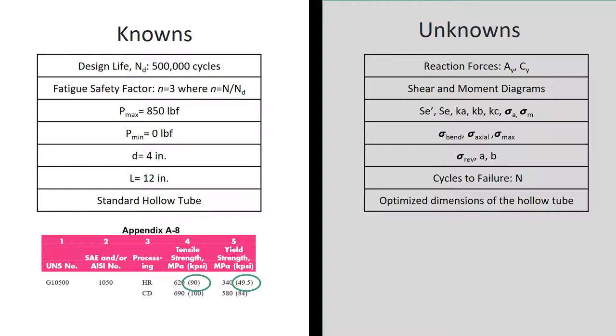For this project, the optimized design should have a life cycle of 400,000 or better, a plastic safety factor of 3 or better. Our standing is going to have a force of 850 pounds and a minimal serum. Our diameter is going to be 4 inches and our length is 12. We have a standard hollow tube. The tube follows the standard of the SAE 1050. It is hot rolled, meaning that it's going to be 90 kpsi ultimate tensile strength and a yield strain of 49.5 kpsi.